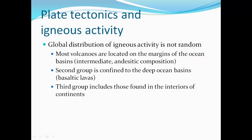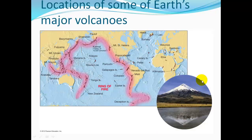The distribution of igneous activity around the earth is not random. Most volcanoes are located on the margins of the ocean basins, especially the Pacific Ocean — the Ring of Fire. There's a secondary group confined to deep ocean basins, and a third group found in the interior of continents. Around the Ring of Fire we have plenty of volcanoes on the outer edge of the Pacific plate, and also along the ocean ridge.